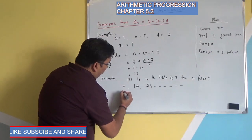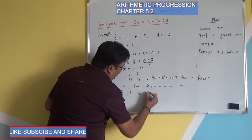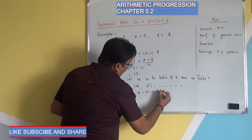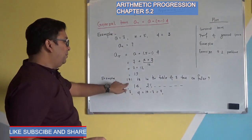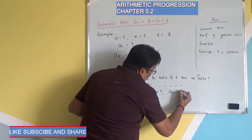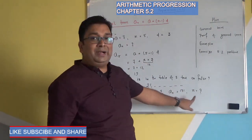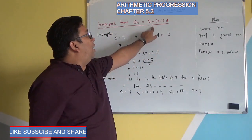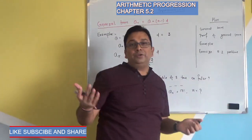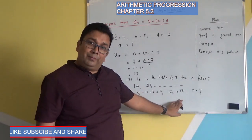In the table of 7, the first term is 7 and the common difference is 14 minus 7, that is 7. If we think of the nth term as 171, then our first target is to find n. When we find n using this formula and we get a complete whole number — like 3, 4, 5, 6, 9, 12 — no decimal — that means 171 is present in the table of 7.